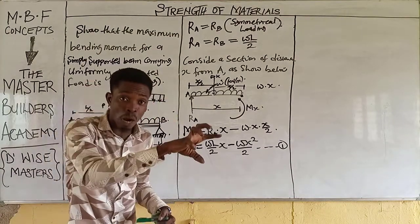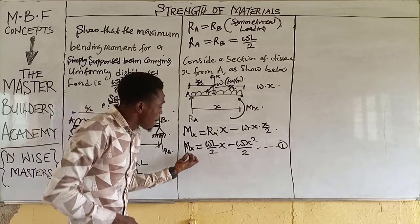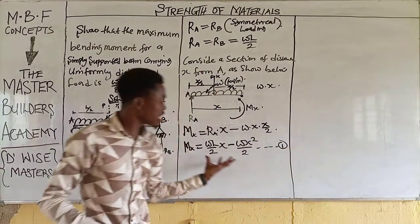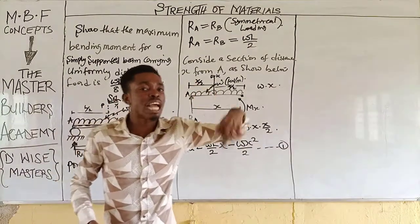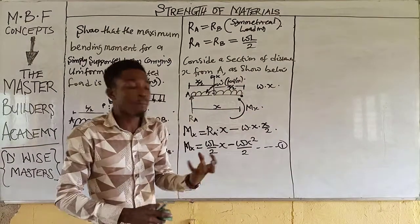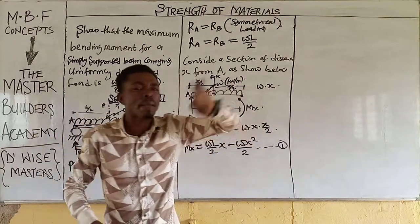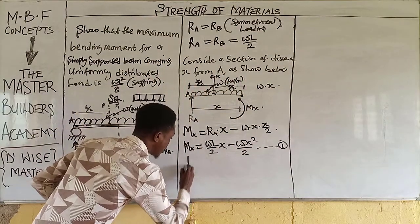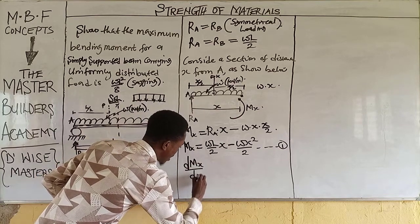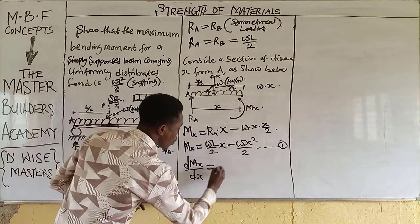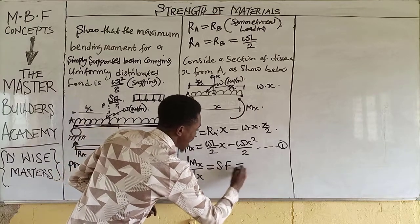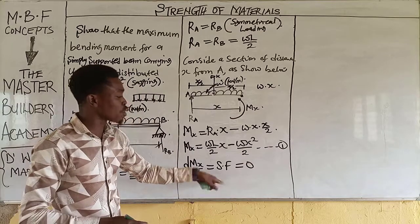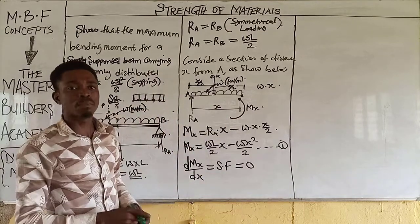When you differentiate the bending moment equation, you obtain the shear force equation. At the point where the shear force equals zero, you have the maximum bending moment. So differentiating M_X with respect to X gives the shear force, and we set that equal to zero.